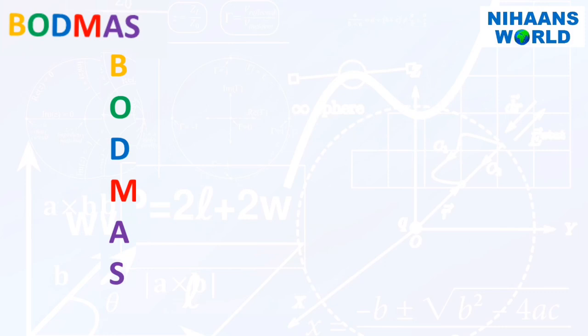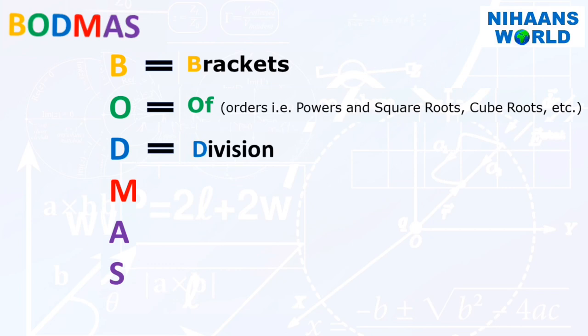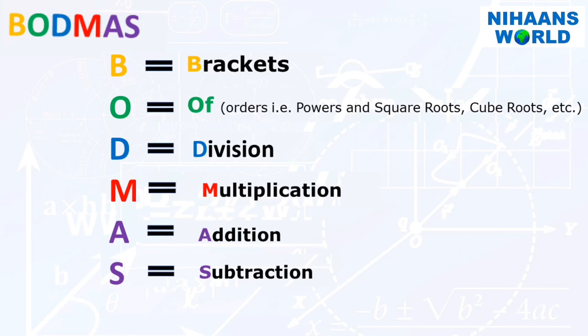Let's see easy and simple way to remember BODMAS rule. B for bracket, O for of, D for division, M for multiplication, A for addition, S for subtraction.